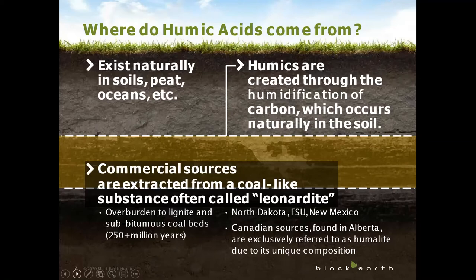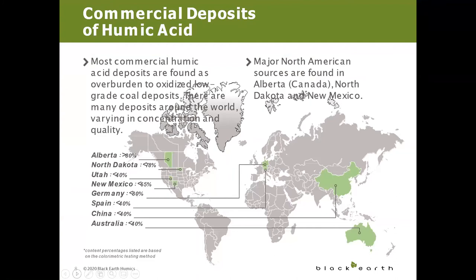There are many reserves of leonardite deposits around the world and they can vary in size, concentration, and quality. Major North American sources are found in Alberta, North Dakota, and New Mexico. However, the humic acid deposit found in Alberta is exclusively referred to as humalite due to its unique composition and high quality.